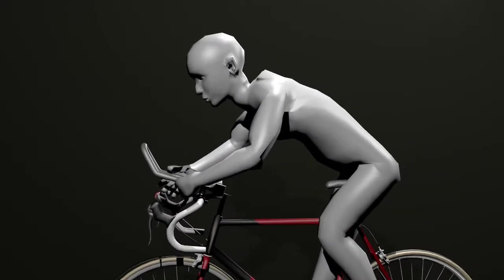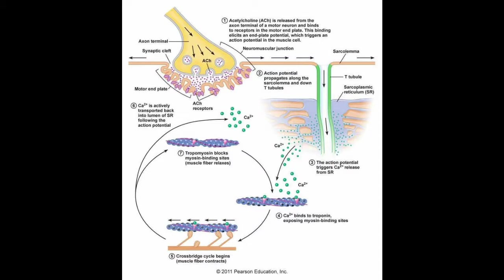In the synapse between a muscle fiber and a neuron, the action potential is transferred to the muscle fiber via neurotransmitters released from synaptic vesicles and captured by receptors on the muscle fiber membrane.